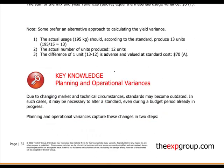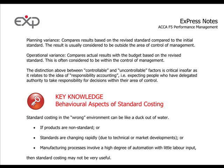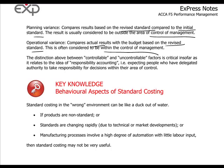In terms of planning and operational variances, these are calculated because differences can arise between budgeted amounts and actual results due to external circumstances such as market changes, making standards outdated. We want to know what portion of variances is attributable to management and what is not. Planning variances compare the revised standard to the initial standard — this is considered outside management's control. Operational variances compare actual results to the revised budget — this is within management's control, linking back to controllable versus uncontrollable factors in responsibility accounting.